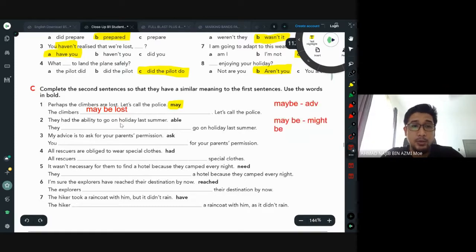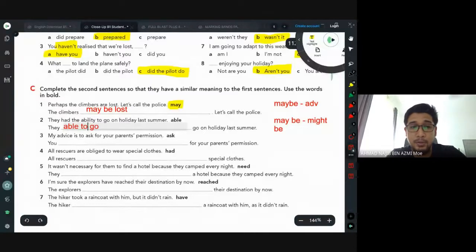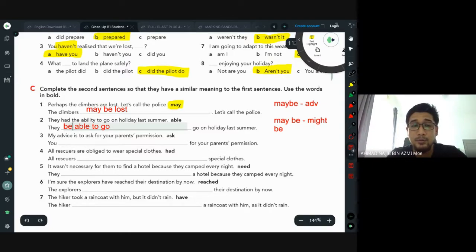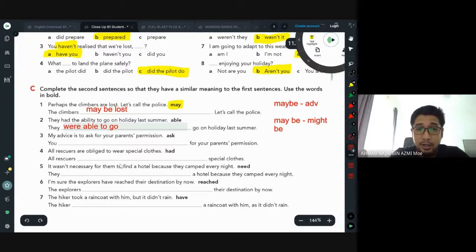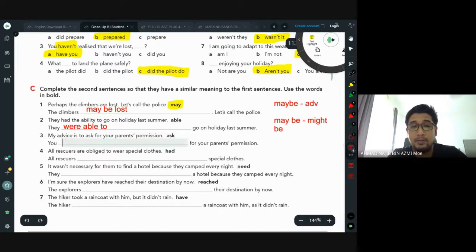Number two: they had the ability to go on holiday last summer. Using the word 'able', can somebody do this? They able to go. What word is missing before 'able'? Be. Actually you are right, tapi dia punya bentuk dia lain, you can't say 'they be able to go'. Look at the tense: they had, past tense, so change 'be' into 'were'. They were able to go. My advice is to ask for your parents' permission. Advice - what modal should we use to give advice? Should. Should ask for your parents' permission.